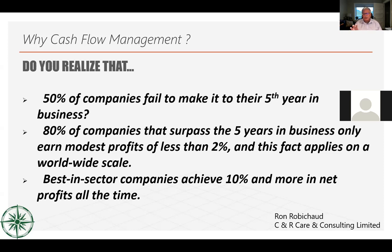A balance sheet is made up of three things: assets — what you own; liabilities — what you owe; and equity — what's left after subtracting liabilities from assets. It's no more complicated than that. When you're depreciating things quicker than you need to, that creates serious problems from a cash flow perspective.